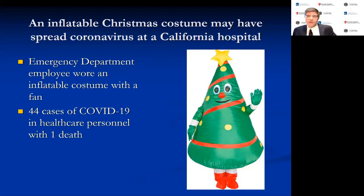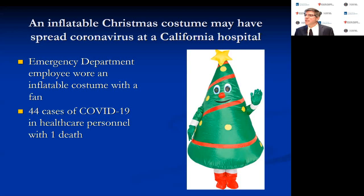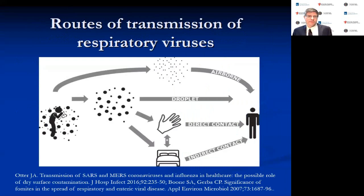There was a notable case at a California hospital where a person in the emergency department wore an inflatable Christmas costume with a fan to keep it inflated, was unknowingly asymptomatic, and 44 cases of COVID-19 and one death among personnel resulted. In both this scenario and our van outbreak, sequencing of the virus is really essential to definitively confirm that these are linked cases, since there can be multiple simultaneous community sources.